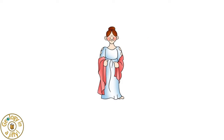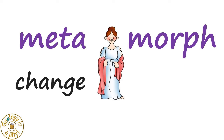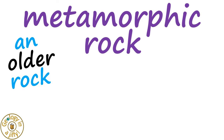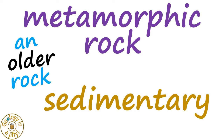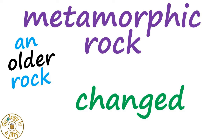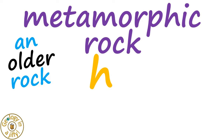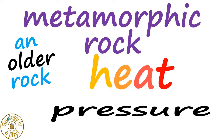The term metamorphic can be split into two parts, from the ancient Greek of meta, meaning to change, and morph, meaning form, giving us the modern term of metamorphic rock — meaning an older rock, such as an igneous rock, a sedimentary rock, or a metamorphic rock, that has changed due to the effects of increasing heat and increasing pressure.